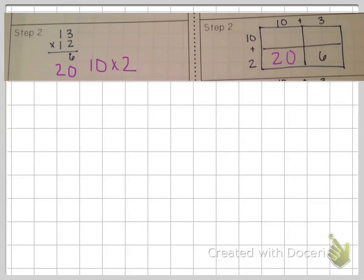So what we've done is we've multiplied both of the numbers, both of those digits in our top number by two.